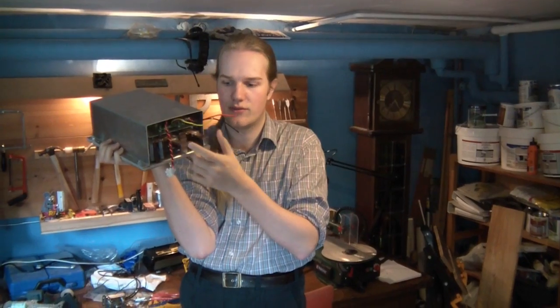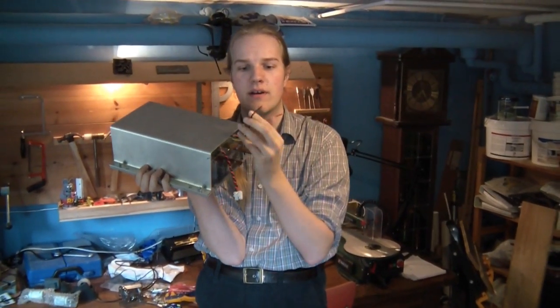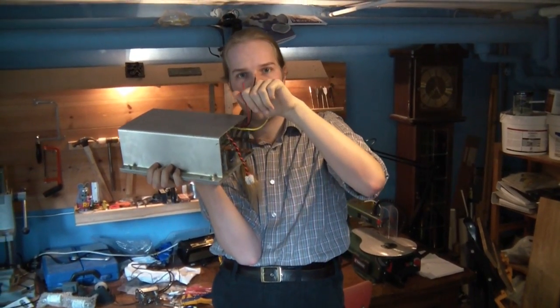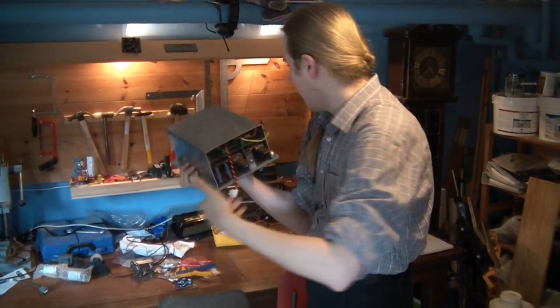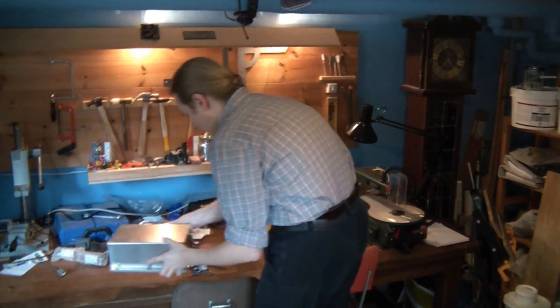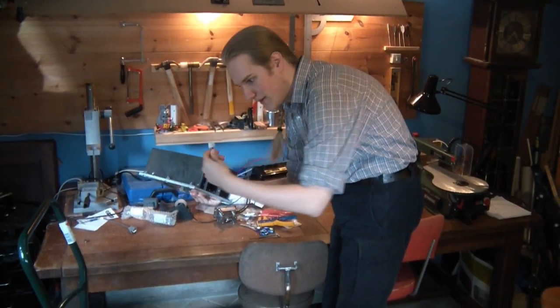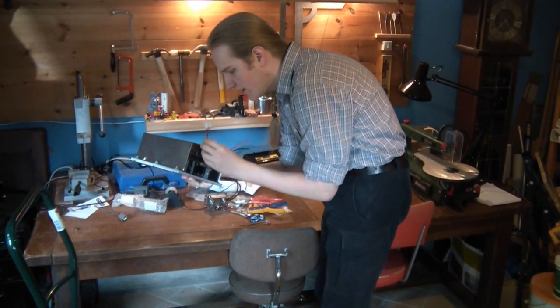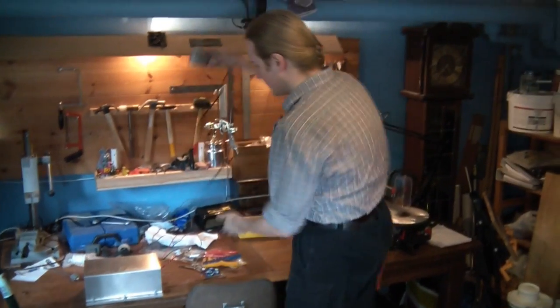They are from the traction battery pack. And these little ones are from the auxiliary battery. And the twisted pair of wires, almost forgot to mention, the twisted pair of wires here, they connect to the pot box.